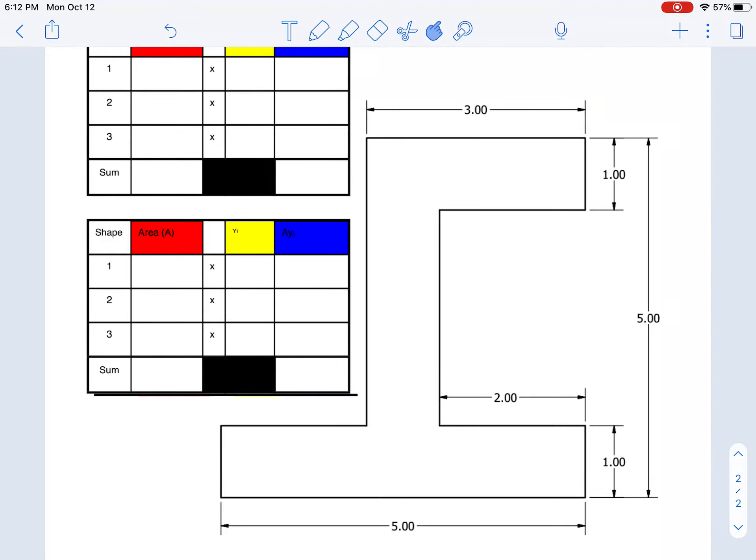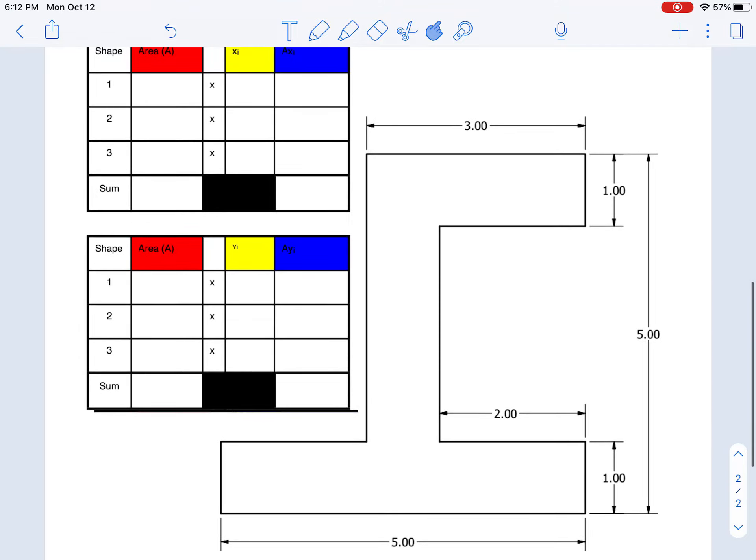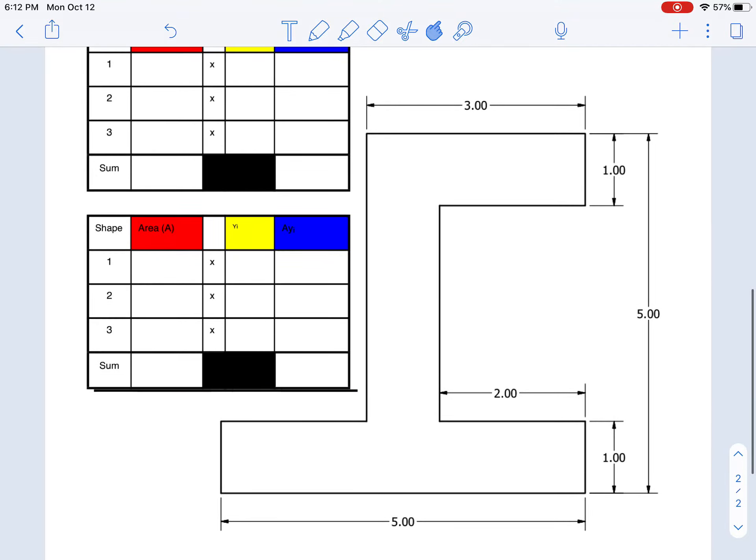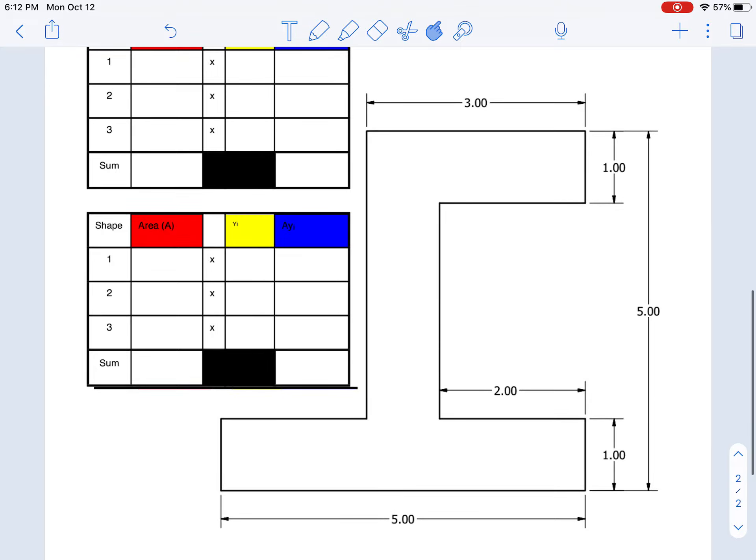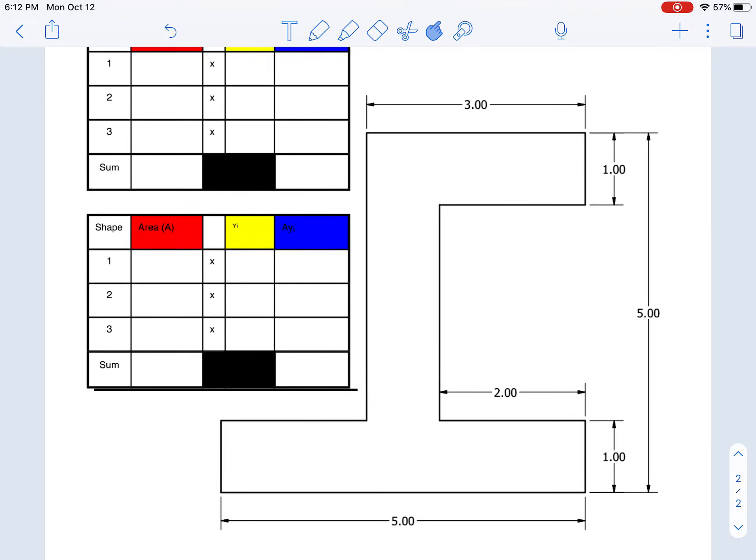Okay, we're going to find the centroid of this complex shape. We're assuming that this shape is a cross-section of a large beam that's uniform in density. The first thing you always should do is identify a zero-zero.